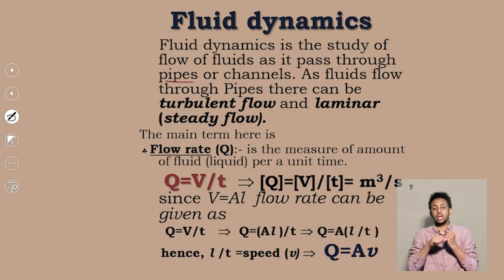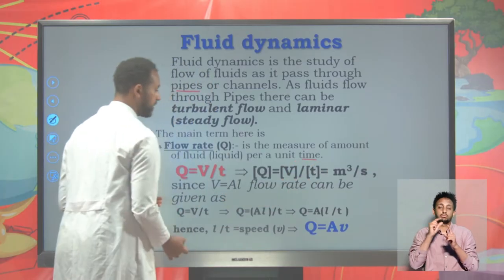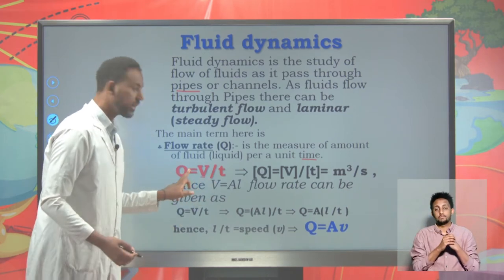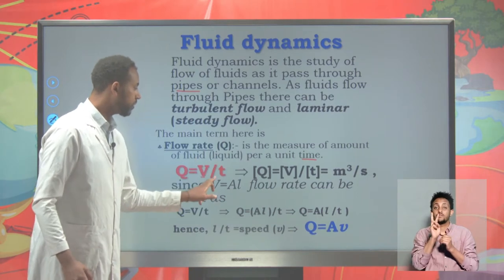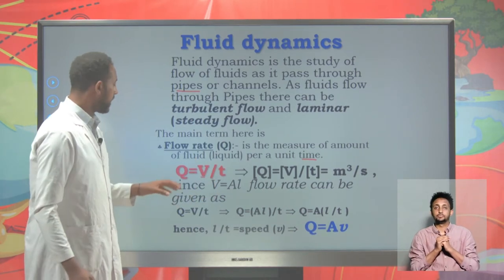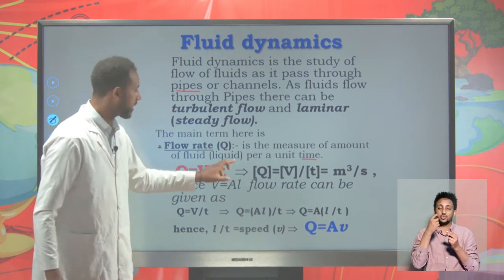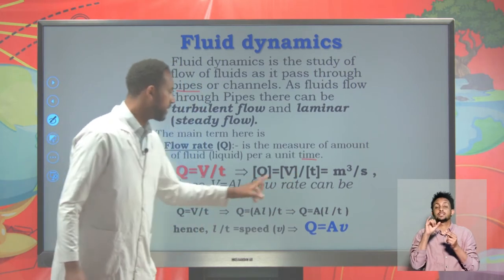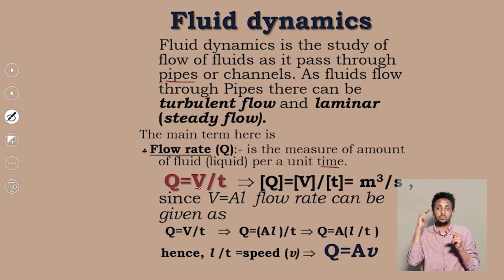Flow rate measures the amount of fluid per unit time, and the amount of fluid is measured in volume. Flow rate can be mathematically expressed as volume V over time T. Its SI unit is the SI unit of volume over the SI unit of time: meter cubed per second.